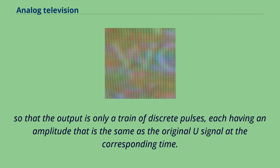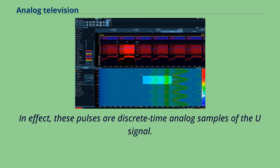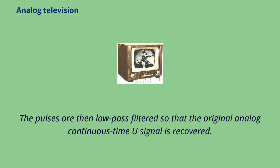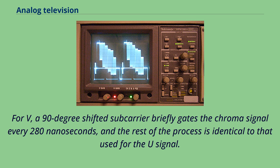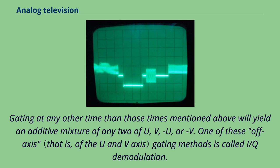For V, a 90-degree shifted subcarrier briefly gates the chroma signal every 280 ns, and the rest of the process is identical to that used for the U signal. One of these off-axis gating methods is called IQ demodulation. Another much more popular off-axis scheme was the X-Z demodulation system. Further matrixing recovered the original U and V signals.